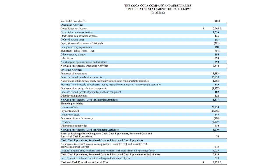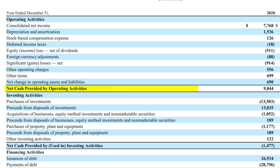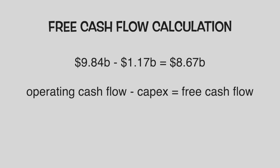Here is Coca-Cola's cash flow statement from 2020. Keep in mind that Coca-Cola is a huge company, so these numbers are in millions. For 2020, Coca-Cola had operating cash flow of $9.84 billion and capital expenditures of $1.17 billion, which appears in the financials as purchases of property, plant, and equipment. To calculate Coca-Cola's free cash flow, we take the $9.84 billion in operating cash flow and subtract the $1.17 billion spent on CAPEX.